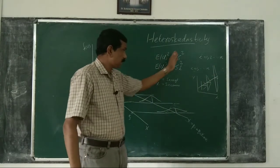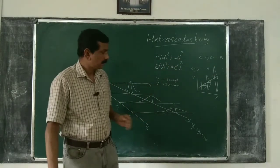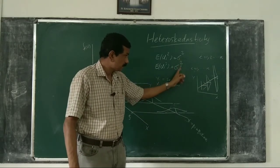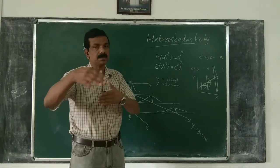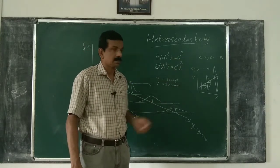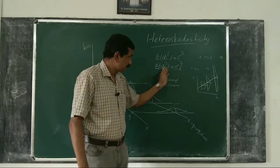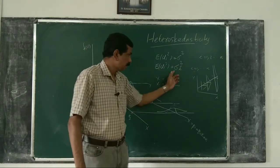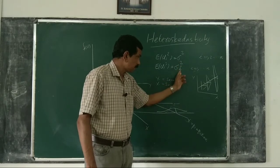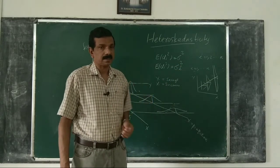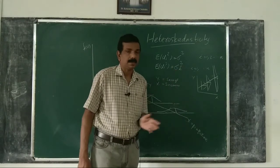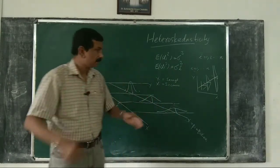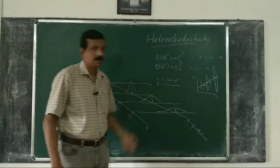If E(Ui²) is a constant corresponding to different levels of X, we do not use the subscript i, because it is a constant number. But if the variance of Ui changes with each X — X1, X2, ..., Xn — then we have σ₁², σ₂², σ₃², etc., and the variance changes. That is why we use the subscript i in σᵢ².